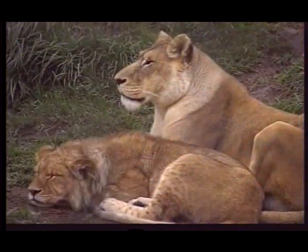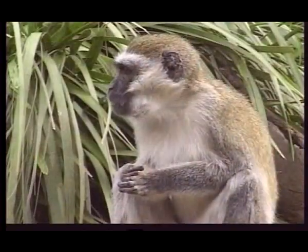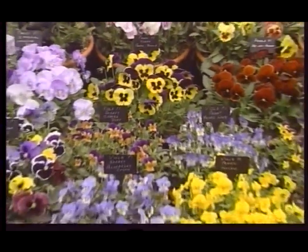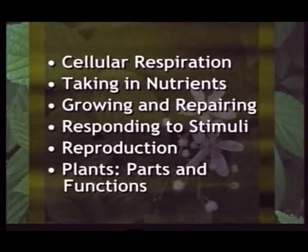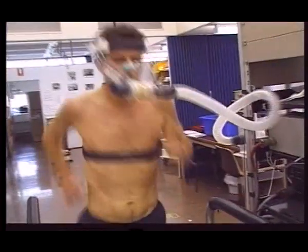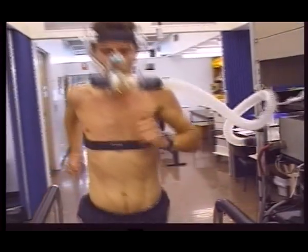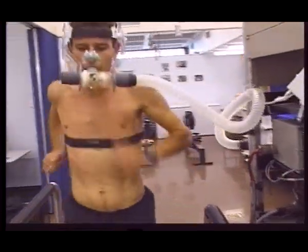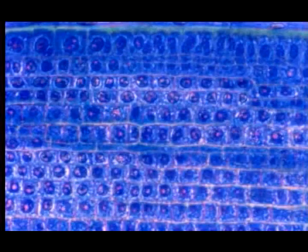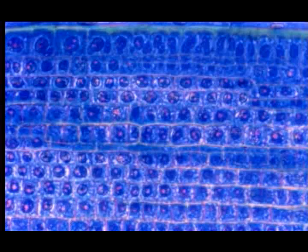Life depends upon energy, and all living organisms have a way to provide energy to carry out life functions. Most organisms, including most plants, release energy from food products by a process called cellular respiration. When we hear the word respiration, we usually think about the animal, and specifically human, process of breathing and using oxygen. Cellular respiration, as you can guess from its name, takes place within cells.